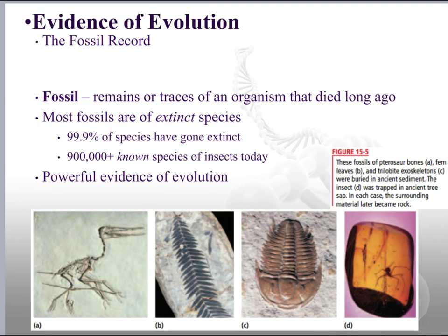That does not necessarily mean that it's the exact form that that particular animal or plant was in, because remember, you can have fossils that are footprints, eggs, or excrements. So there are all kinds of stuff that can be fossilized.